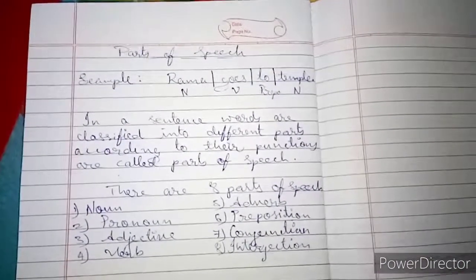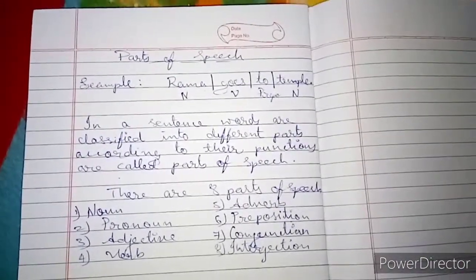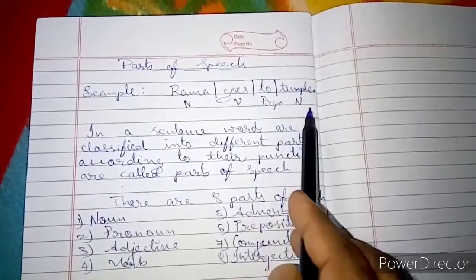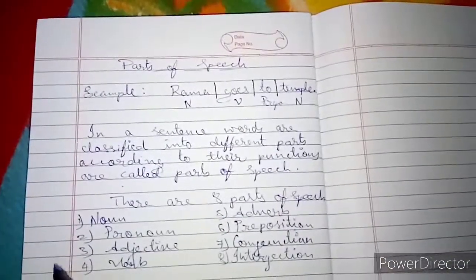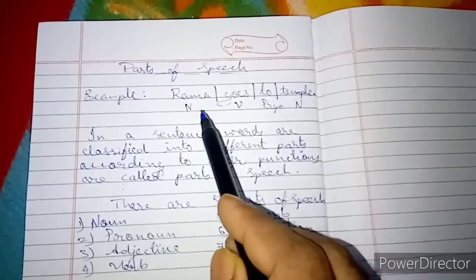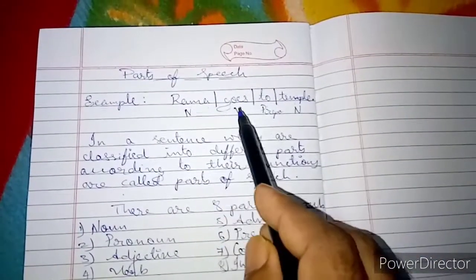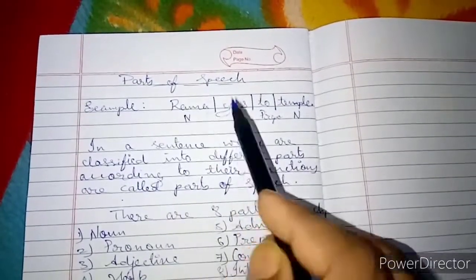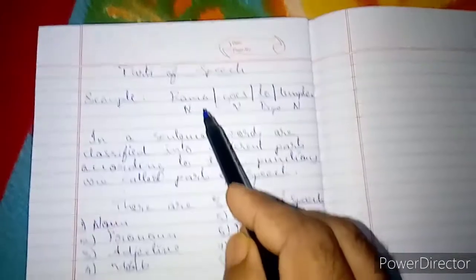So, we will take one example here. The sentence is: Rama goes to temple. In this sentence, words are classified.